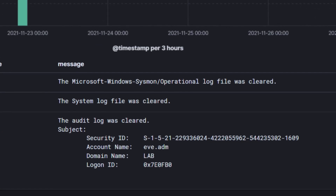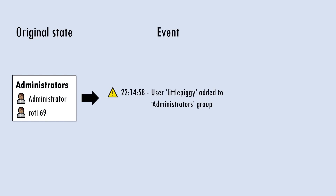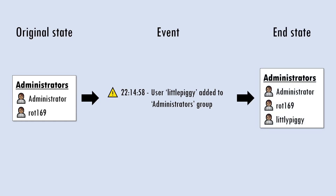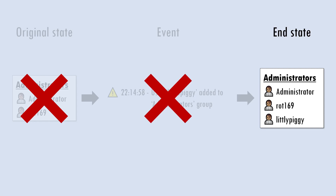Now clearing event logs is suspicious and should be investigated, but how can we investigate if we don't have logs? We need a slightly different mindset here. Events tell us what has changed between a starting state and an end state. For example, the starting state may be that there are only two direct members of the local administrator group, the event is that a new user is added, and the end state is that there are now three direct members. Without logging we can't see the specific event — when and by who — but we can still observe the end state.